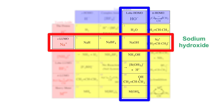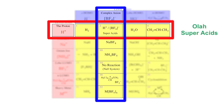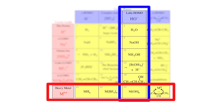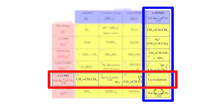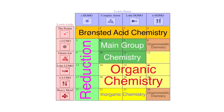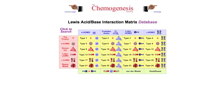For example, hydroxide ion and sodium ion gives rise to sodium hydroxide. Hydride ion and the proton give rise to hydrogen H2. Complex anion Lewis bases and the proton give rise to George Olah-type super acids. Lobe-HOMO Lewis bases such as hydroxide ion and metal cations give rise to classic inorganic complexes. Heavy metal cations and pi-HOMO Lewis bases give rise to pi-organometallic chemistry. Pi-LUMO Lewis acids and pi-HOMO Lewis bases give rise to Diels-Alder type cycloaddition chemistry. Many of the chemistries that school and university students are expected to be familiar with can be mapped to the Lewis acid-base interaction matrix. A full database of Lewis acid-base interactions is available on the Chemogenesis website.